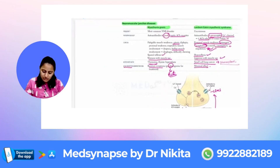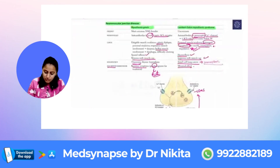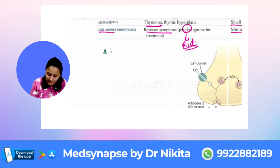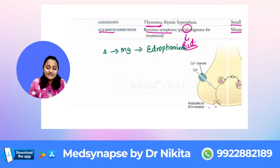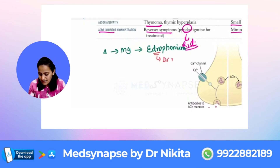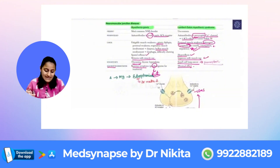Myasthenia gravis is very important. What drug do we use in the diagnosis and what in the treatment? Treatment is pyridostigmine — it gets the patient rid of myasthenia. For diagnosis of myasthenia gravis, the drug used is edrophonium, a short-acting acetylcholinesterase inhibitor. Remember: 'Dr. Doctor makes the diagnosis' — edrophonium for diagnosis. This is called the Tensilon test.